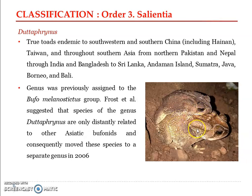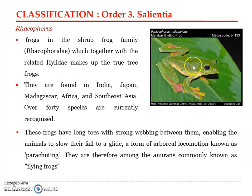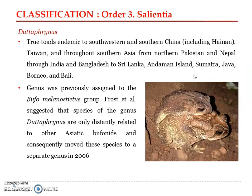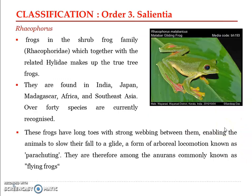In the case of toads, they have very dry and rough skin, so the skin is not a respiratory surface. In frogs, it is very smooth-skinned and hence acts as a very good respiratory surface. Frogs are slim and usually smaller in size compared to toads, which are robust and very large-sized anurans. The snout region in toads is rounded, while in frogs it is pointed.